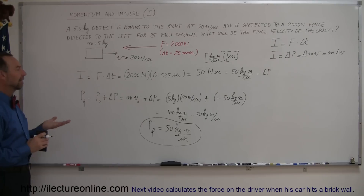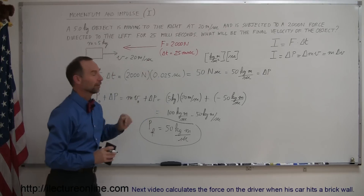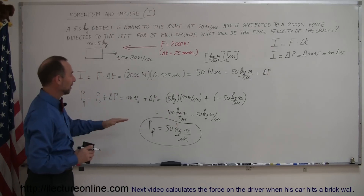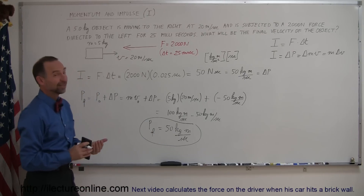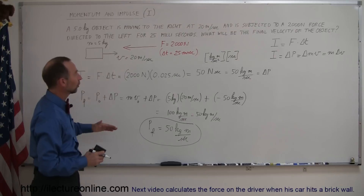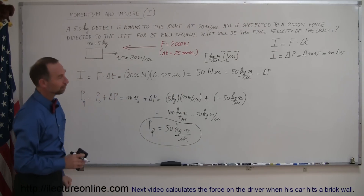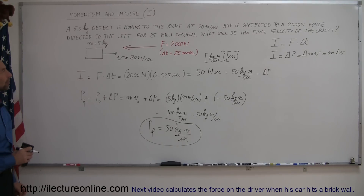So if it has half the original momentum, can we figure out how fast it's moving? If it was moving at 20 meters per second when it had a momentum of 100 kilograms meters per second, how fast is it now moving when it only has a momentum of 50 kilograms meters per second? Well, it should therefore be half the velocity, because the mass hasn't changed, so it will now be moving to the right at 10 meters per second. And that's what we can do with impulse. We need to show a few more examples of that.